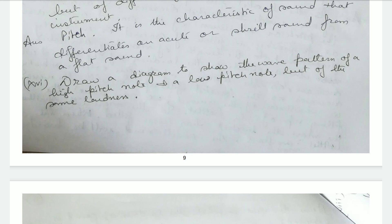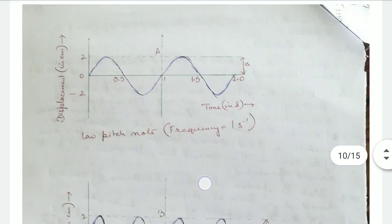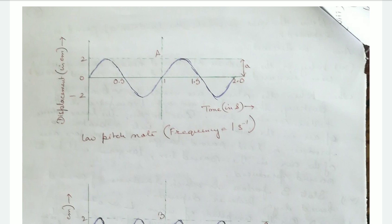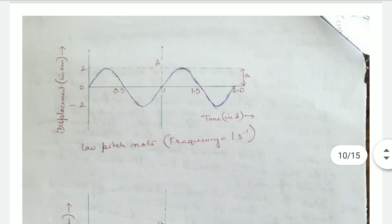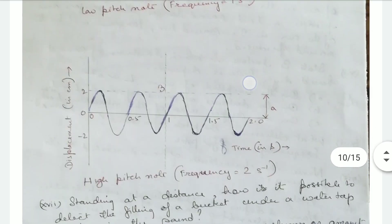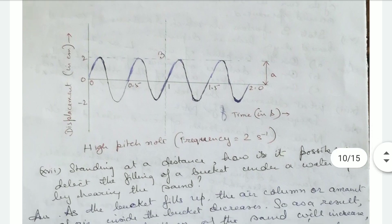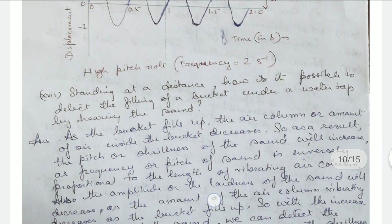Draw a diagram to show the wave pattern of a high pitch note and a low pitch note of the same loudness. The first is a low pitch note — the frequency is about one per second. In the low pitch sound, the crests and troughs are not so close. But in the high pitch sound, the crests and troughs are very close — lots of crests and troughs are formed per second.